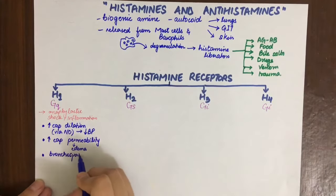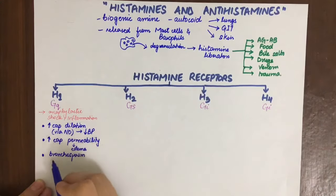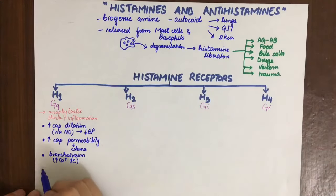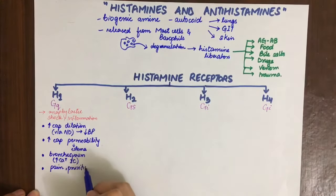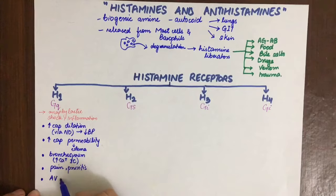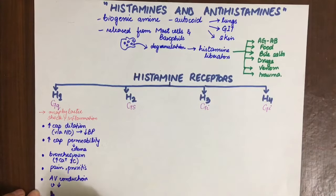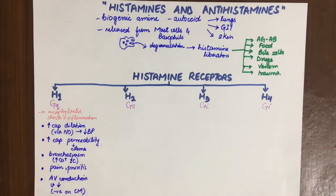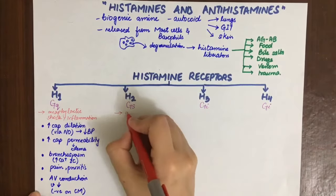Third, H1 constricts bronchial smooth muscle via the IP3/DAG pathway, which increases intracellular calcium concentration. Fourth, it is involved in pain and pruritus mechanisms by activation of peripheral nociceptor receptors. Fifth, it decreases AV nodal conduction and thus has a negative effect on cardiac function.